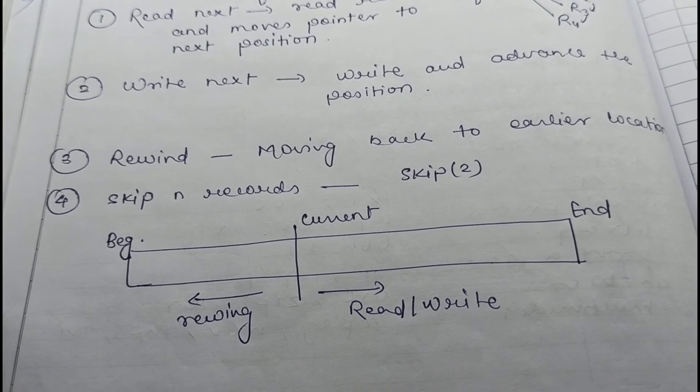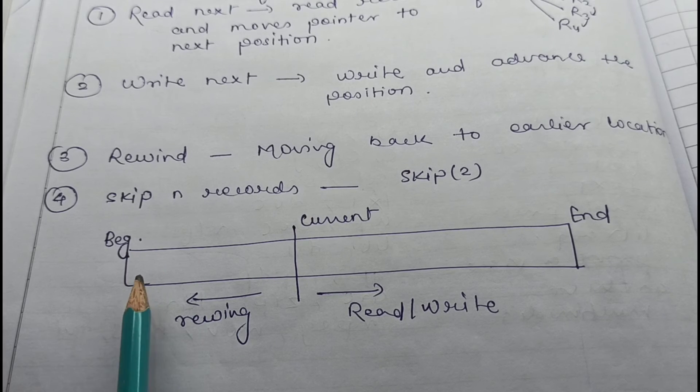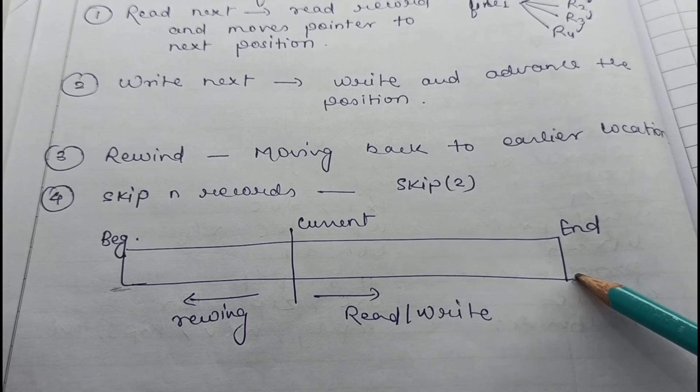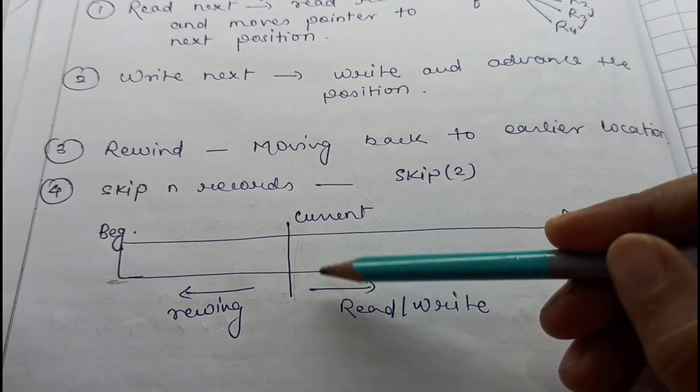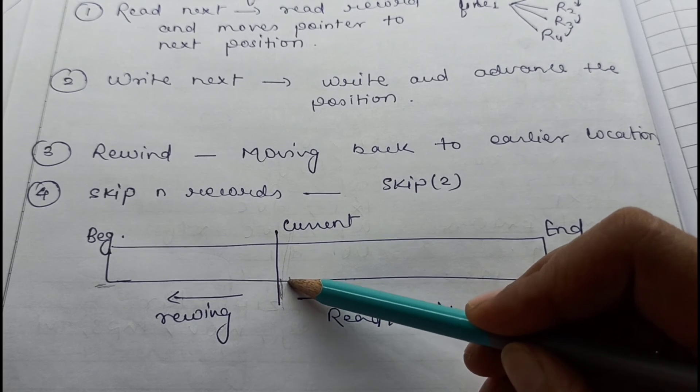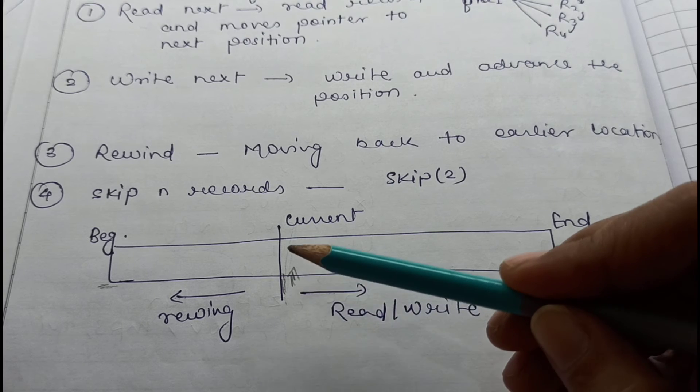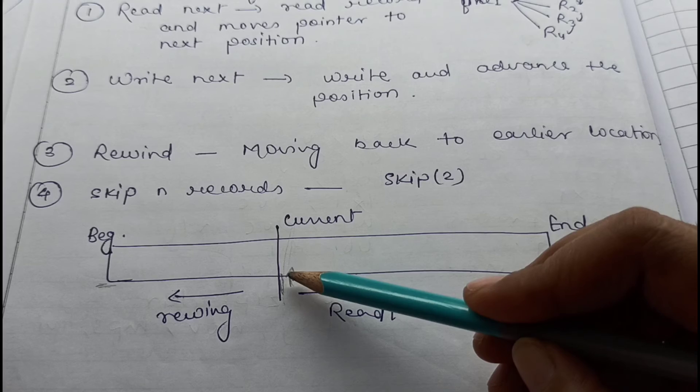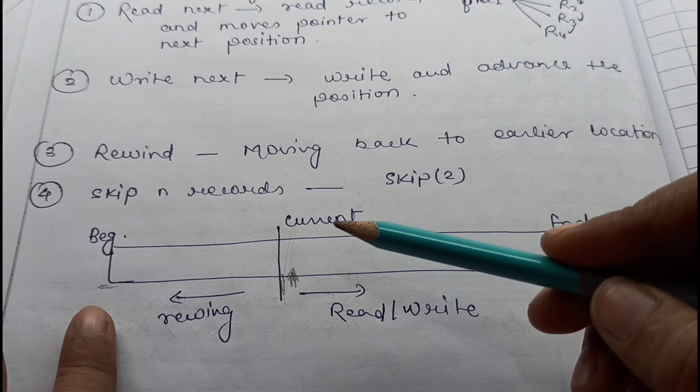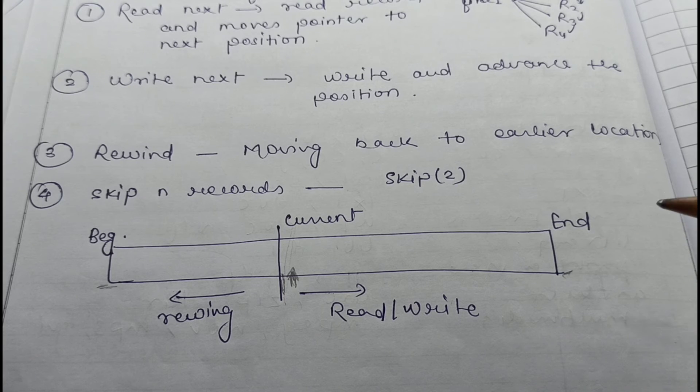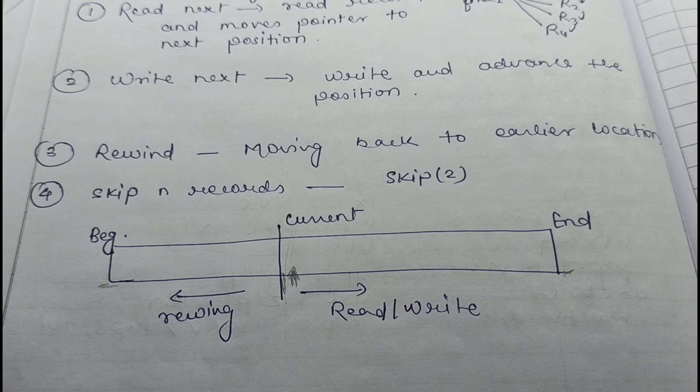So here is this diagram. Just assume that we have the file - this is the beginning of the file, this is the end of the file. And we are in the middle, this is our current position. If we want to read from the file, if we are here, we read it and advance this pointer which will point to the next location. This is read next. If you want to perform write on the same location, you can perform write and then advance or move the pointer to the next location. That is write next. Rewinding means you are coming back to the beginning of the file. So in this way, our editors and compilers usually access files which are stored in the secondary storage.